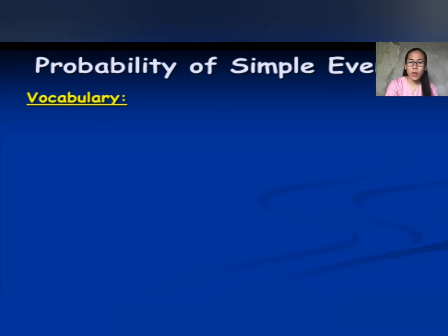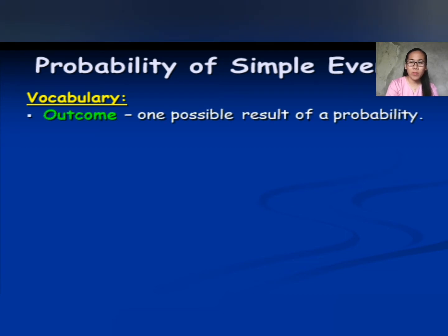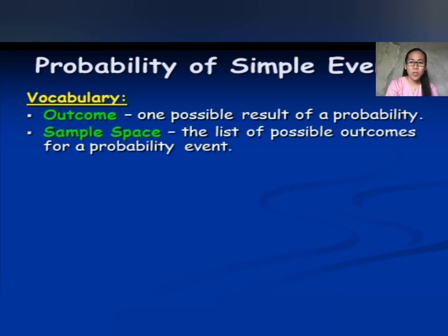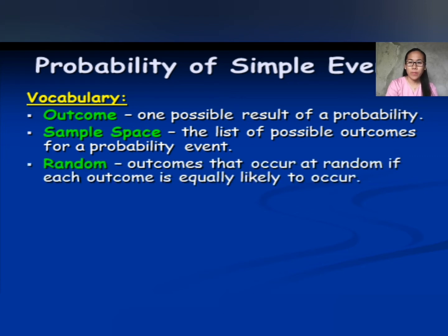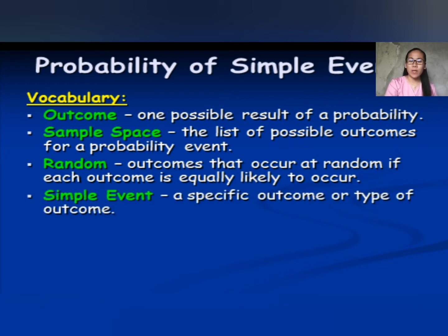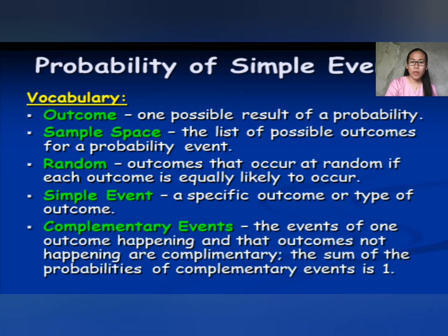Here are the vocabulary words. First, outcome: one possible result of a probability. Second, sample space: the list of possible outcomes for a probability event. Random: outcomes occur at random if each outcome is equally likely to occur. Simple event: a specific outcome or type of outcome. And complementary events: the events of one outcome happening and that outcome not happening are complementary. The sum of the probabilities of complementary events is 1.